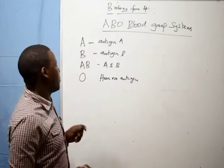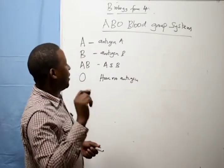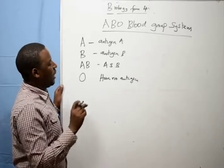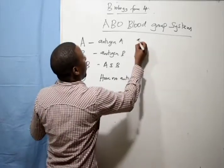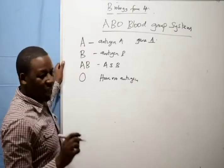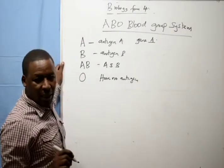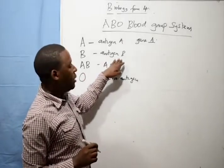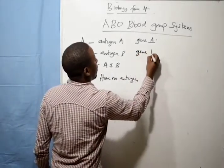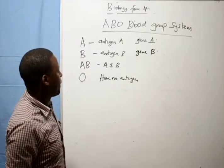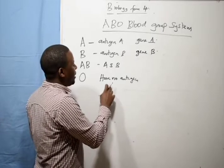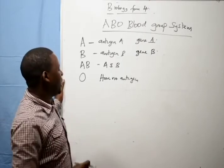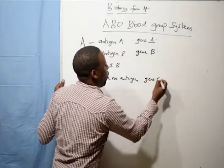Therefore, blood group types are determined by the antigen present. The presence of antigen A is determined by gene A, the presence of antigen B is determined by gene B, and the presence of no antigen is determined by a gene called gene O.